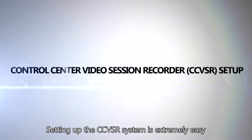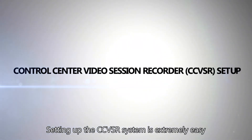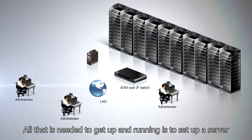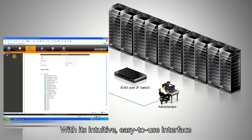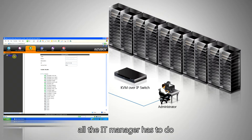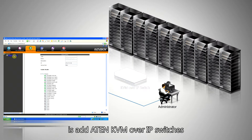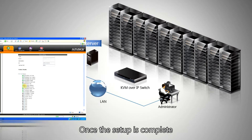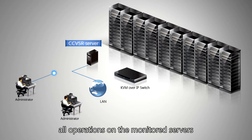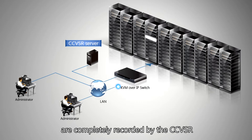Setting up the CCVSR system is extremely easy. All that is needed to get up and running is to set up a server and install the CCVSR software on it. With its intuitive, easy-to-use interface, all the IT manager has to do is add A10 KVM over IP switches and select the servers to be monitored and recorded. Once the setup is complete, all operations on the monitored servers are completely recorded by the CCVSR.